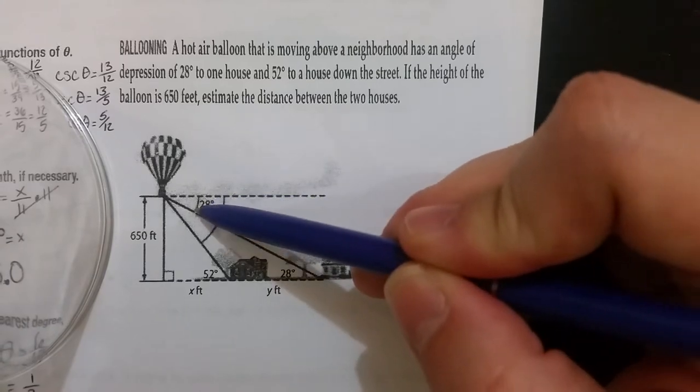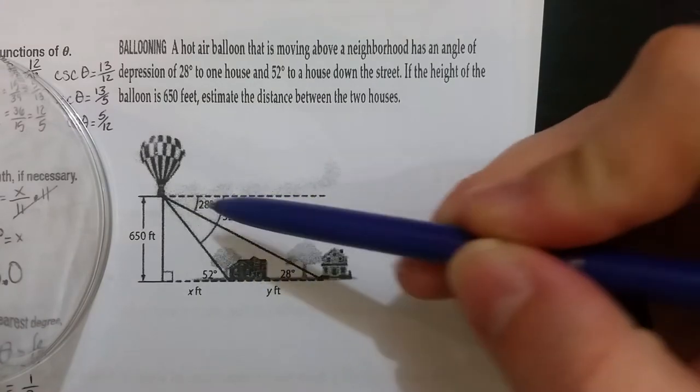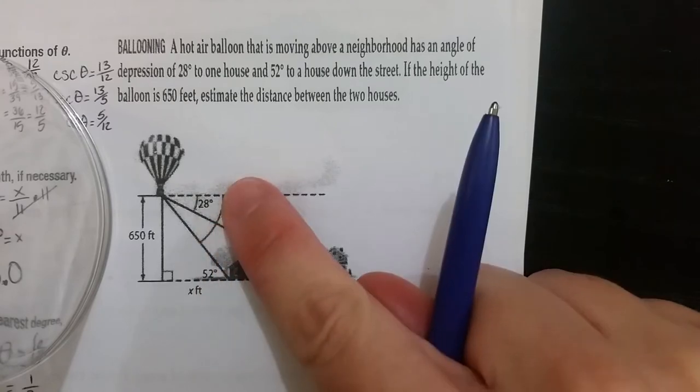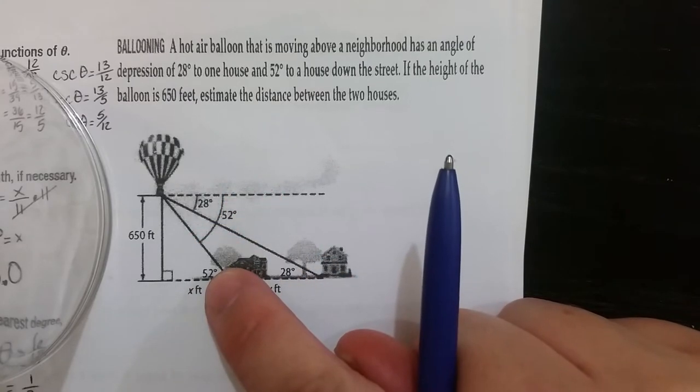They've already done some of the work for you by showing you these alternate interior angles. So if this is 28, then this one's also 28, and if this is 52, then this part is also 52.